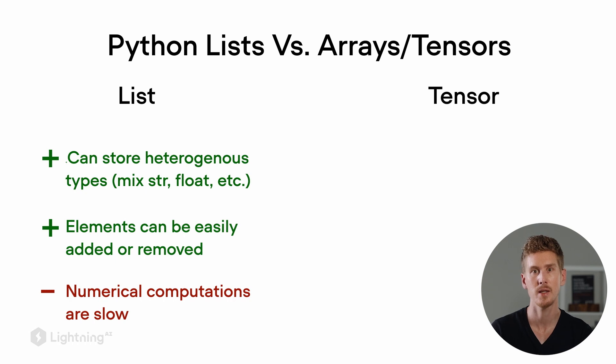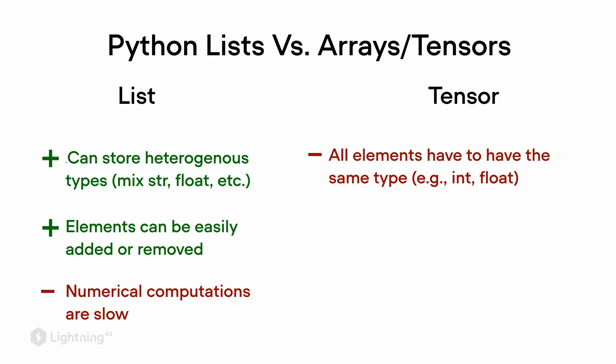The limitation of using tensors though is that all the elements in the tensor have to be the same type. For example, float or integer. Yeah. And in contrast to lists, tensors also have a fixed size. So we can't easily add or remove items from a tensor.